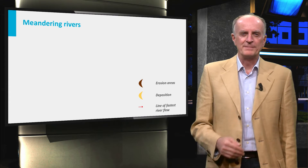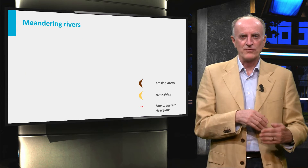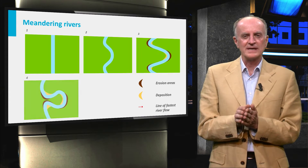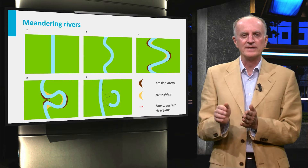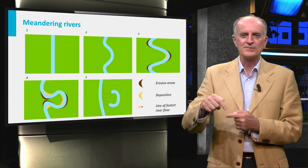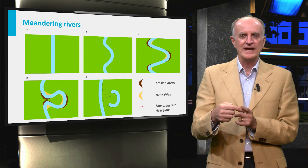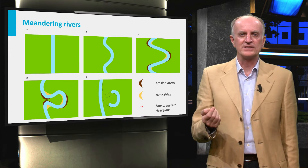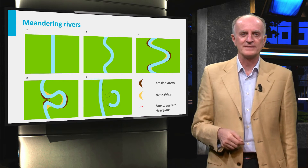Meanders are bends in the river course which form from small irregularities and progressively grow until the neck between the two meanders is broken and an oxbow lake, detached from the main river, is formed.